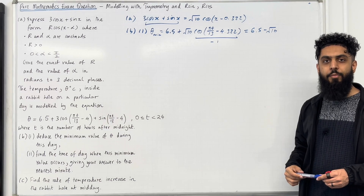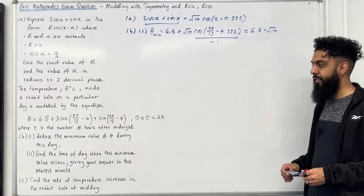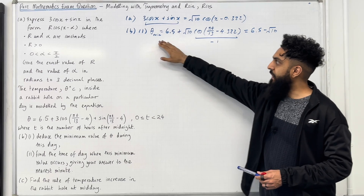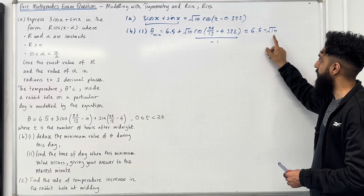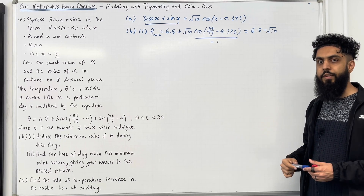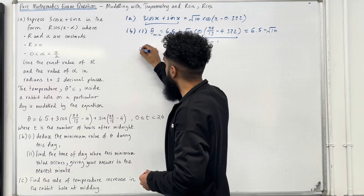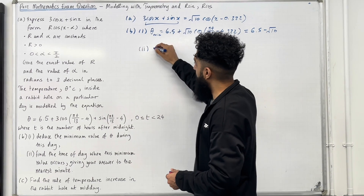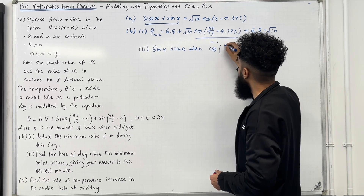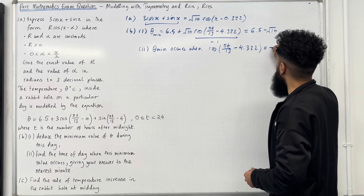Moving on to Part B Part 2: find the time of day when this minimum value occurs, giving your answer to the nearest minute. We know theta minimum occurs when the entire cosine expression equals negative 1, so theta minimum equals 6.5 minus root 10. Please pause the video, have a go. Let's look at the solution: theta min occurs when cos(pi t over 13 minus 4.322) equals minus 1.